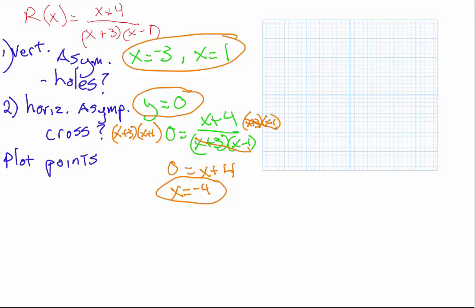Now I'm going to draw in the vertical asymptotes at x equals negative 3 and x equals 1, and the horizontal asymptote at y equals 0. We know the graph crosses the horizontal asymptote right at x equals negative 4. We've got three sections to test: to the right of x equals 1, in between the two asymptotes, and to the left of x equals negative 3.